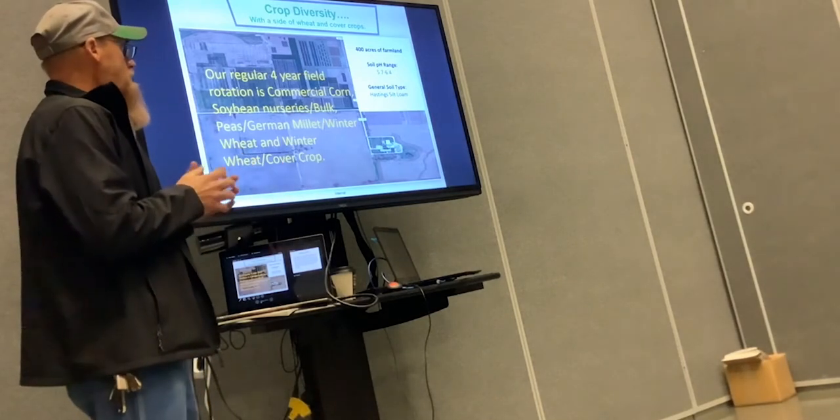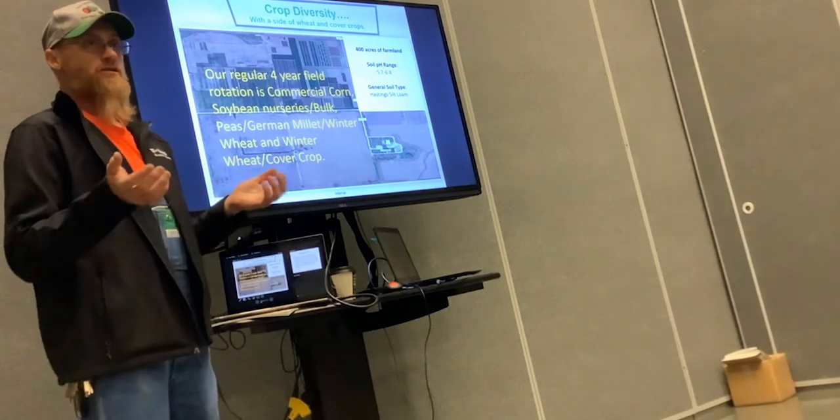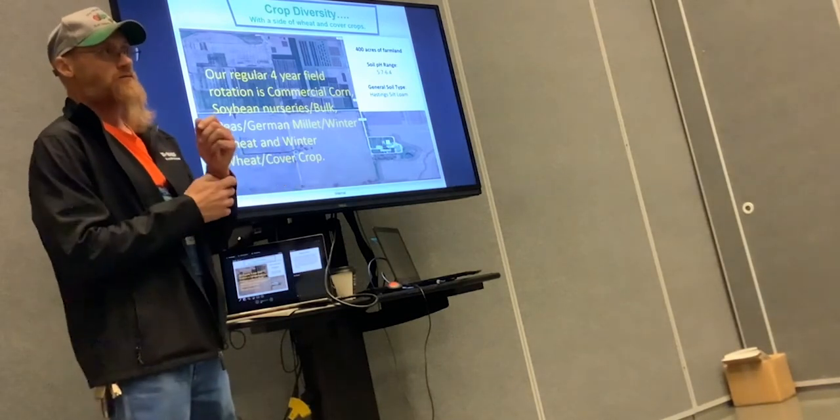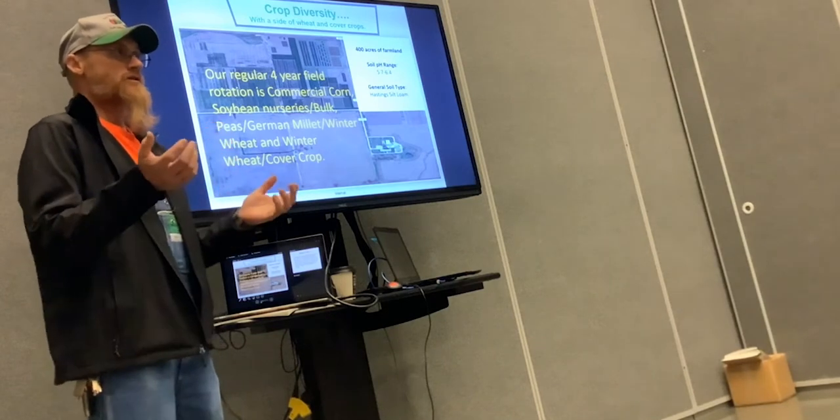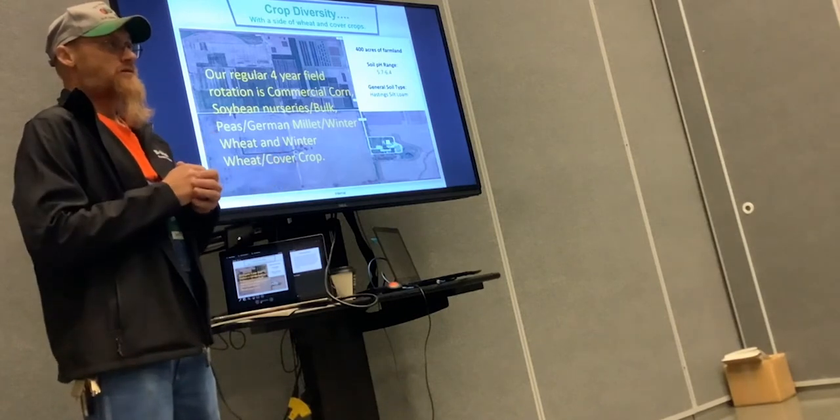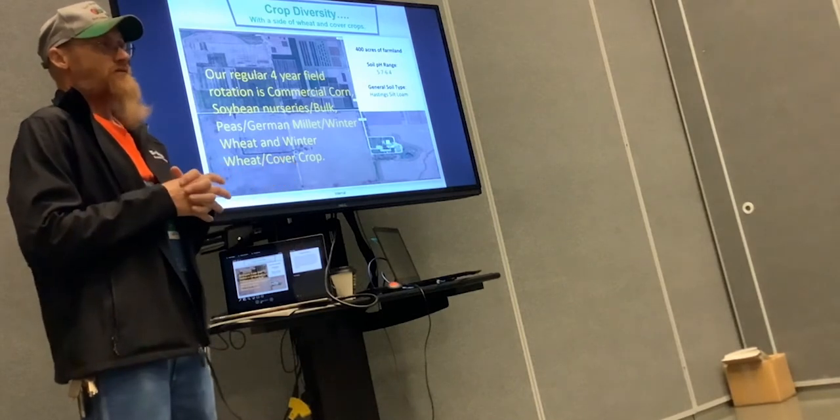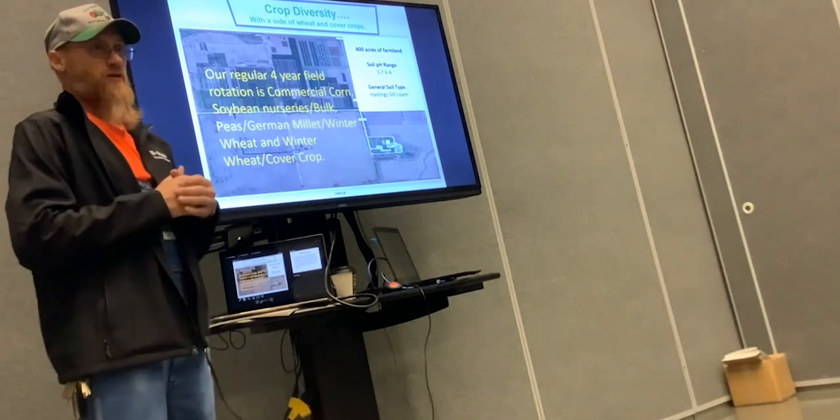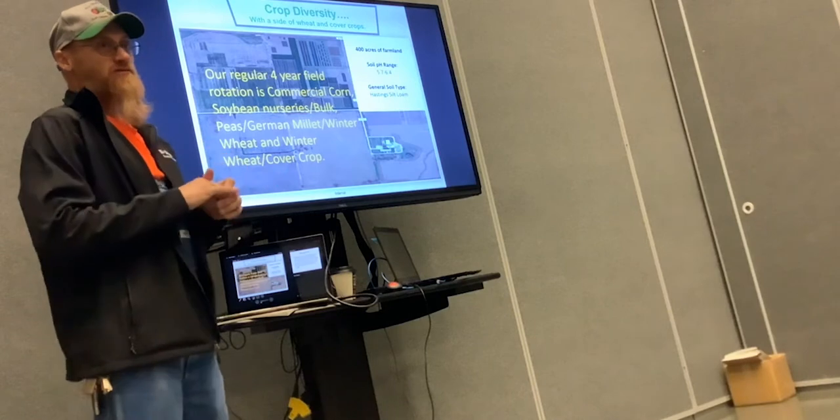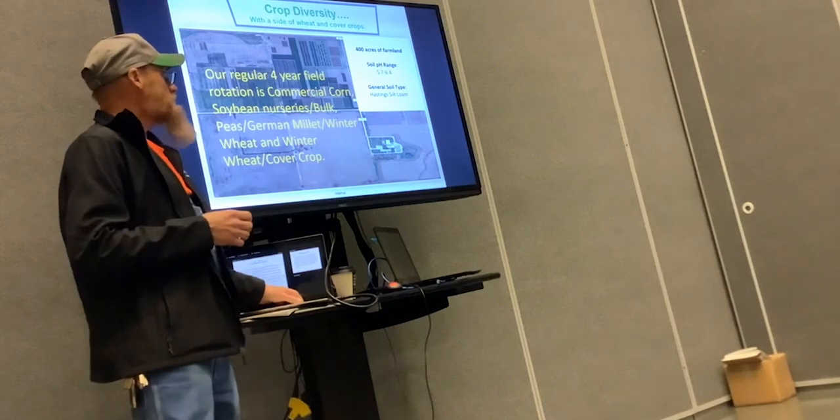The peas come off about mid July. Jeff harvested them and got about 50-ish bushels to the acre, not a fantastic yield, but did great for what we wanted to do and pretty good as far as peas go. We're in the middle of corn and seed corn country, so everything we're doing is a learning experience.